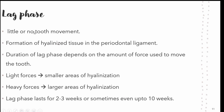Next is the lag phase, where little to no tooth movement occurs. There is formation of hyalinized tissue in the periodontal ligament, and the duration of the lag phase depends on the amount of force used to move the tooth. Light forces produce smaller areas of hyalinization, while heavy forces produce larger areas. This period lasts about two to three weeks, and can sometimes extend up to ten weeks.